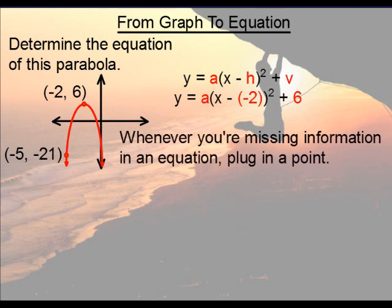Now something in general you should understand. If you're trying to find the equation of any line, curve, whatever, and you're missing something, if you have a point that's on that graph, just simply plug it in. Now we've already plugged in the vertex, so we wouldn't use that. Instead we'd use this other point, negative 5 comma negative 21. We place this into x and y. So this is what we have.